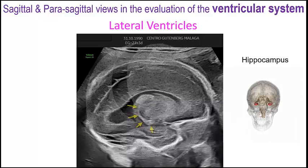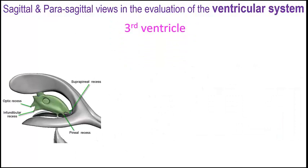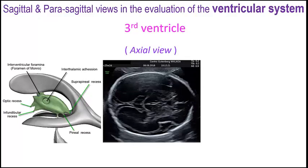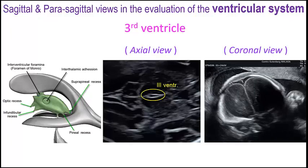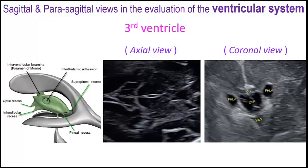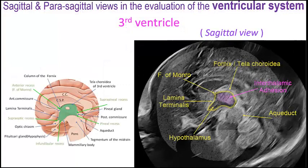The third ventricle can be seen in normal conditions in the axial plane as two parallel lines separating both thalami, and can also be evaluated in the coronal planes below the cavum septi pellucidi. But the best approach to display the third ventricle is the sagittal plane, where we can nicely demonstrate its shape and boundaries. Don't forget to check the interthalamic adhesion.